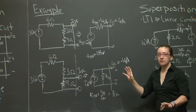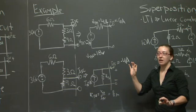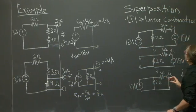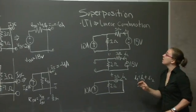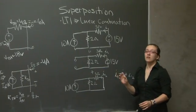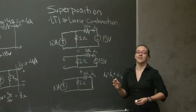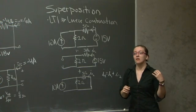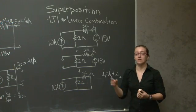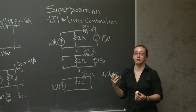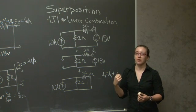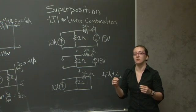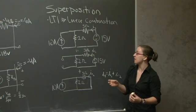That covers Thevenin and Norton equivalence. I'm going to talk about superposition really quickly. Superposition is yet another circuit solving strategy. It falls out as a consequence of only working with LTI components. And it means that in order to solve for a given component current or component voltage, you can actually find it by taking the linear combination of every contribution as a consequence of independent sources. What do I mean when I say that?